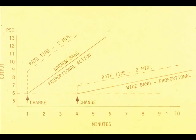Changing the percent proportional band changes the slope of the curve. For the same rate time, the controller output is advanced further for the narrow band because the output change is greater due to proportional action.